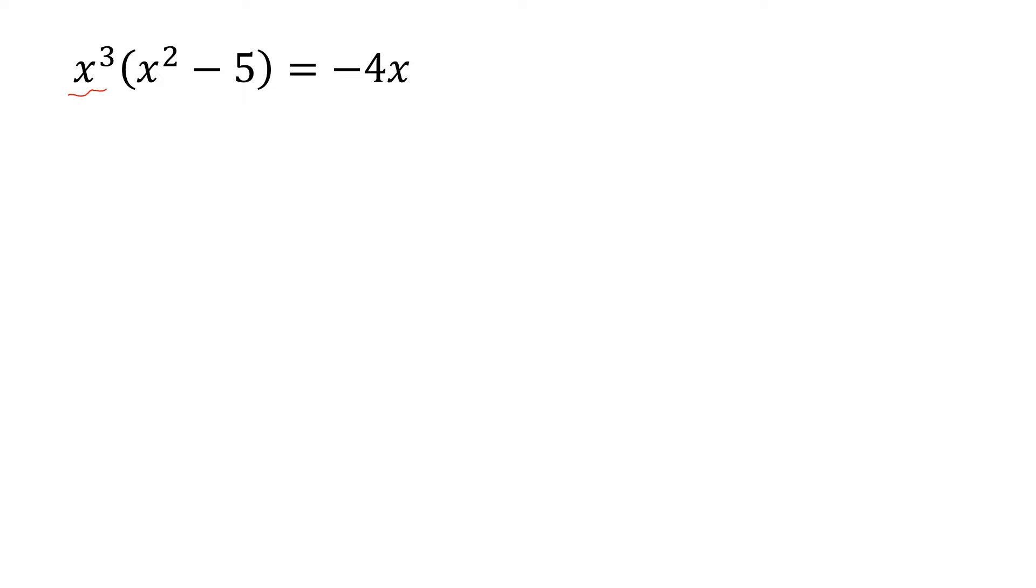The first step, we multiply x cube with this. So we get x power 5 minus 5x cube is equal to minus 4x. We can write it x power 5 minus 5x cube plus 4x is equal to 0.